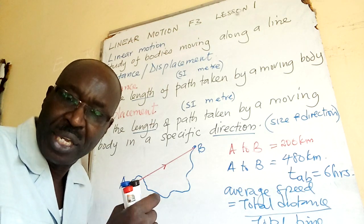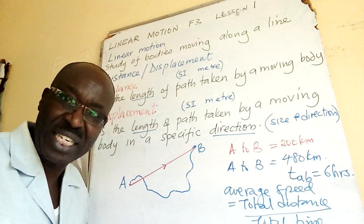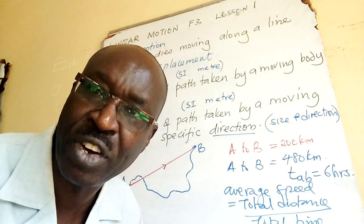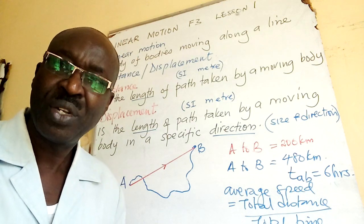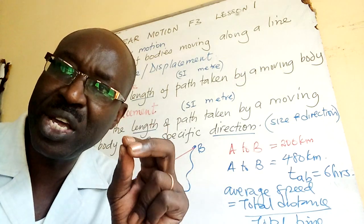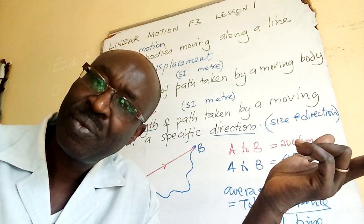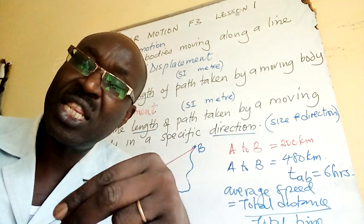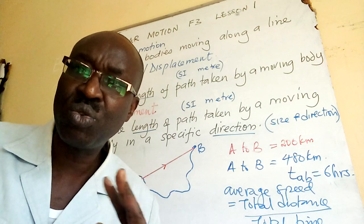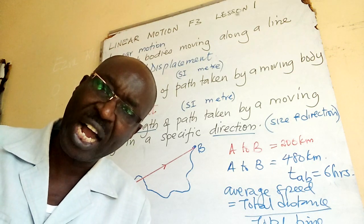Each straight line has a direction, so we talk of displacement — shown in red, straight from A to B with a direction, like a vector. Displacement is a vector quantity in the sense that it has two aspects: one aspect is size — the size of A to B in red is 200 kilometers. Magnitude or size simply means a figure, a number that quantifies.